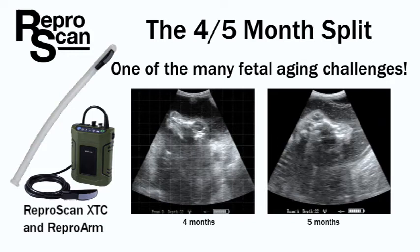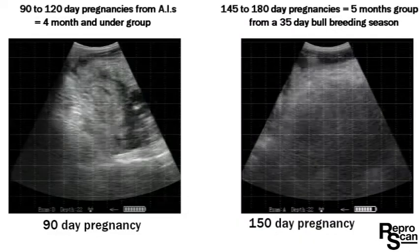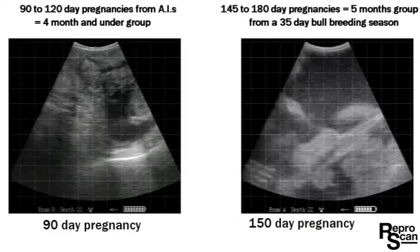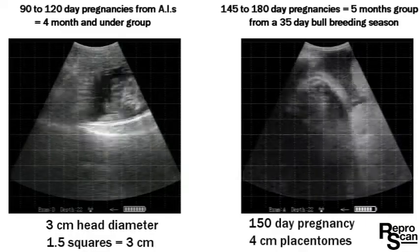Welcome to another REPRSCAN video. This video we'll be talking about the four/five month split, one of the many fetal aging challenges you'll be facing. We're going to use an XTC with a REPR arm to capture these images and we'll be referring to the fetal aging chart you just saw there for measurements.